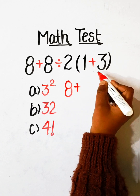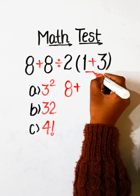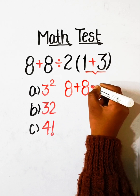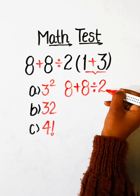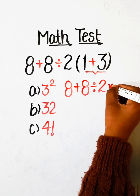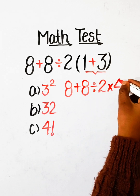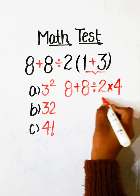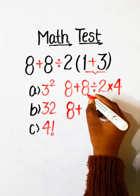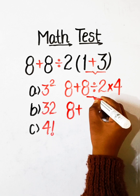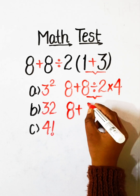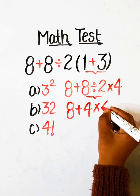First we have to solve the bracket part: 8 divided by 2, then multiply by 1 plus 3, which is 4. Then, following order of operations, we divide first: 8 divided by 2 is 4, multiplied by 4.